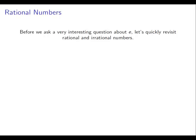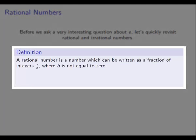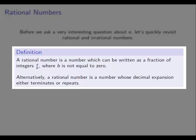So before we ask a very interesting question about E, let's quickly revisit rational and irrational numbers. A rational number is a number which can be written as a fraction of integers. So a number is rational if we can write it as A over B, where B, the denominator, is not 0. Of course, it doesn't make sense to divide by 0. Alternatively, a rational number is a number whose decimal expansion either terminates — so it just stops — or it repeats on and on forever, with a pattern so we can always predict what's going to come next.